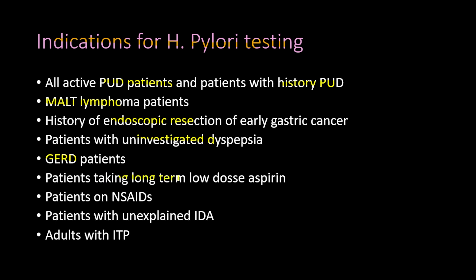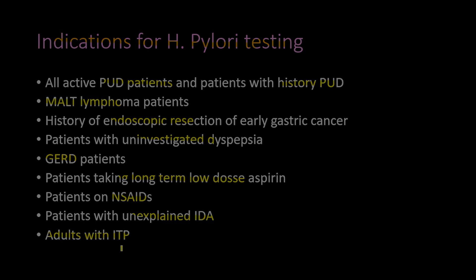Additional indications for H. pylori testing include patients taking long-term low-dose aspirin, since aspirin increases ulceration risk when H. pylori is present; patients on NSAIDs; patients with unexplained iron deficiency anemia, who may have a bleeding ulcer; and adults with immune thrombocytopenic purpura.